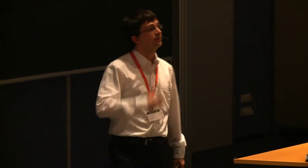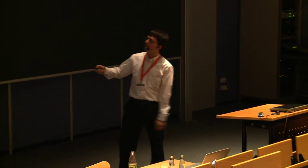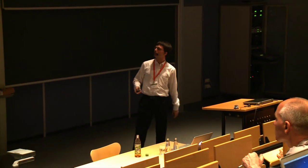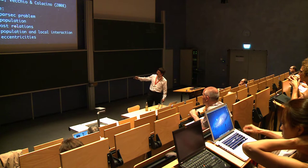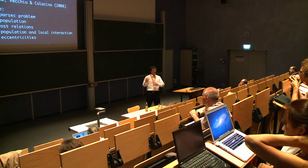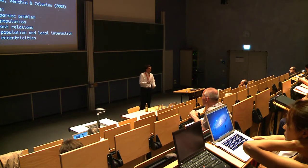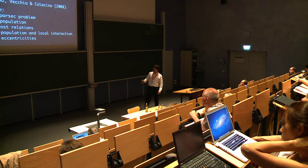If we detect a gravitational wave background, that shows that the final parsec problem, that the black holes can't get close enough together to coalesce, that that is solved in nature, that that is not an issue, because otherwise the gravitational wave background wouldn't be there. We can probe the supermassive binary black hole population, just by measuring the amplitude essentially, and as I showed in the other plots, the black hole-host relationships really define what the spectrum will look like, and so that we shall be able to constrain.